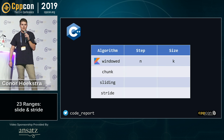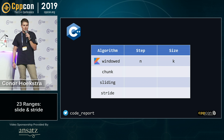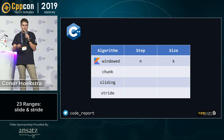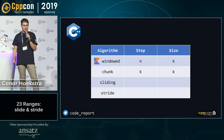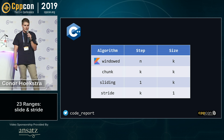So why is this important? Each of the three algorithms we just looked at can be implemented in terms of Kotlin's windowed. When step is equal to size, we get chunk. When step is equal to one, we get sliding. And when size is equal to one, we get stride.